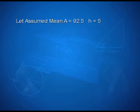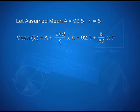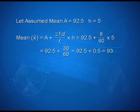Here, let assumed mean A be equal to 92.5, h is equal to 5. Mean can be calculated as A plus summation Fi Di upon summation Fi into h, that is equal to 92.5 plus 6 upon 60 into 5. That can be calculated as 92.5 plus 30 upon 60, that is equal to 92.5 plus 0.5, that gives us 93.